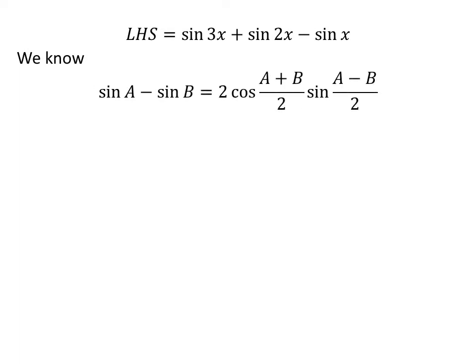We know the famous trigonometry identity: sine of A minus sine of B is equal to 2 times cosine of (A+B)/2 times sine of (A−B)/2. The proof of this trigonometry identity is given in the video appearing in the upper right corner, and the link is also given in the description section.